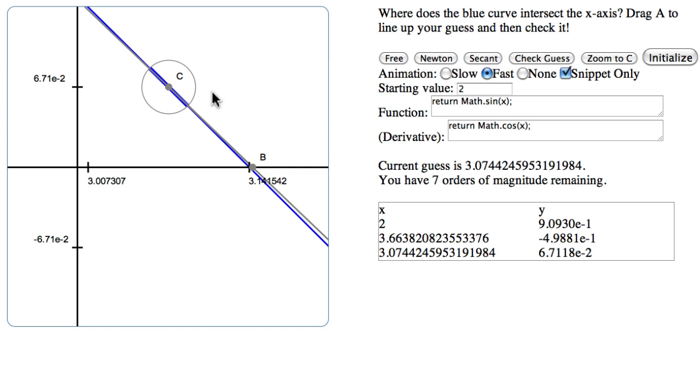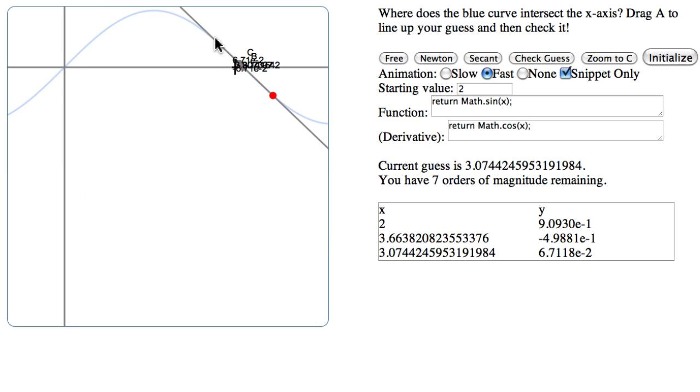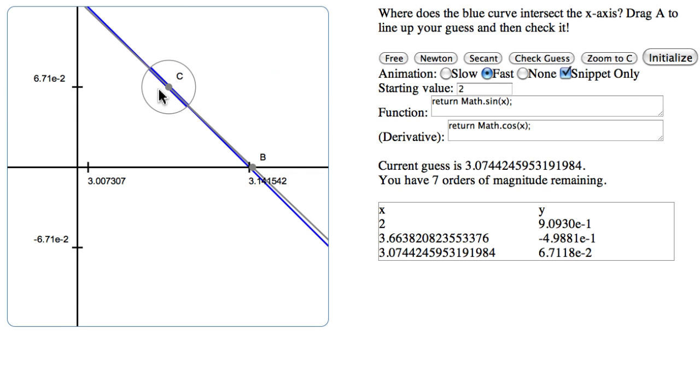So again, secant. And let's look at how, even though the secant, this other point is kind of far away, still we're within the region where it wants to kind of make a line.